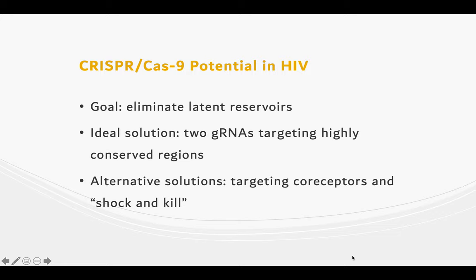It was found that blocking co-receptor CCR5 caused co-receptor CXCR4 to compensate, resulting in a retained ability to bind to the cell. Targeting co-receptor CXCR4 is not a possibility, as it can be harmful to the cell if inactivated.